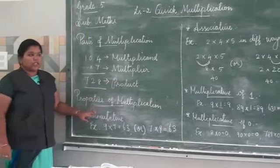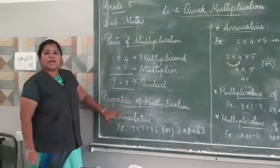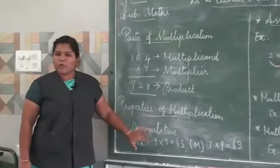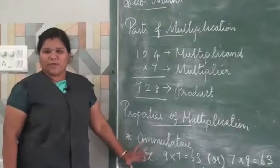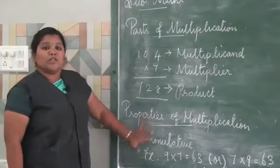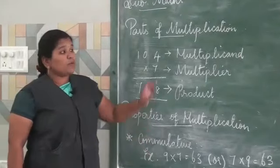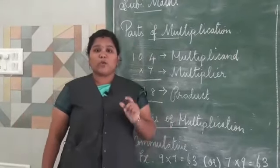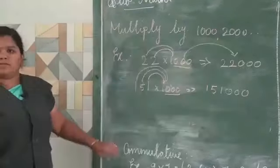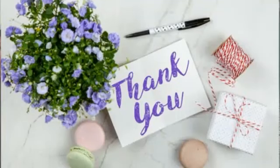These are the four properties of multiplication. If you are thorough with these four properties, you will be able to do multiplication quickly. Thank you children — the remaining concepts we will see in the next class.